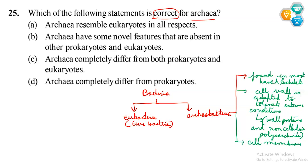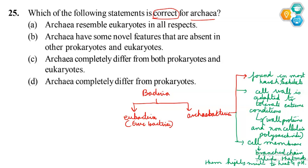The cell membrane has branched chain lipids, and that makes them highly resistant to heat and pH. So these characteristic features of the cell wall and cell membrane are different from other bacteria and are adapted to help them survive in harsh habitats.